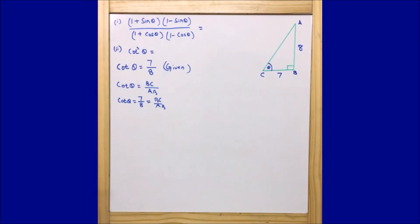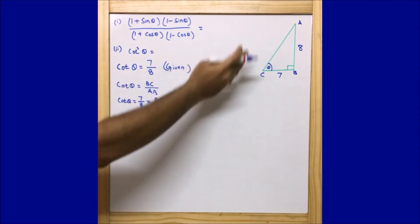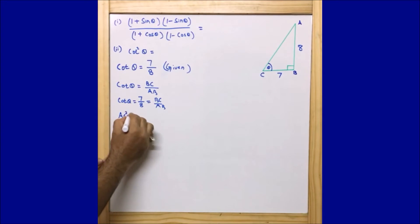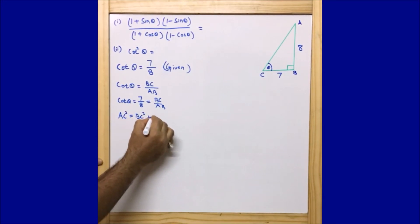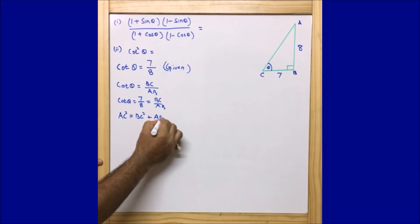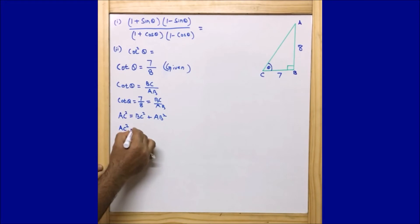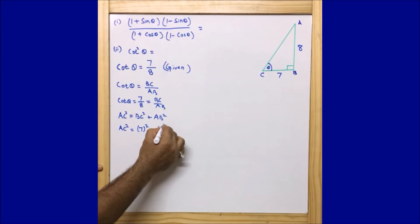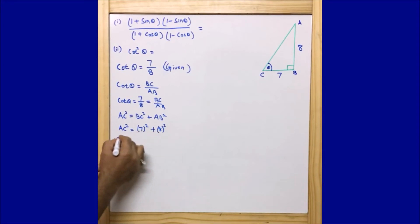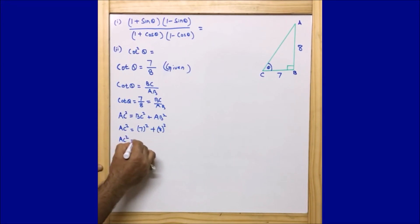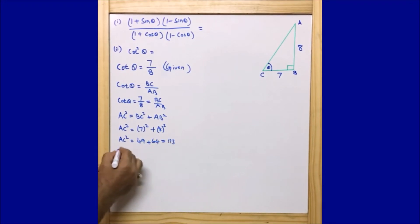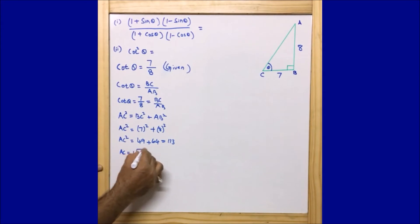Before moving ahead, let us first find out the missing side AC. We apply the Pythagorean theorem: AC² = BC² + AB². So AC² = 7² + 8² = 49 + 64 = 113.